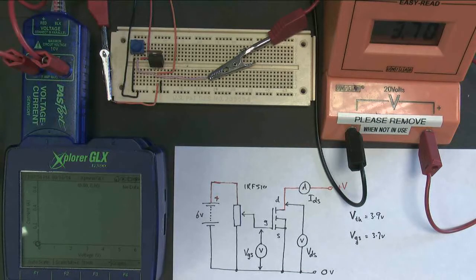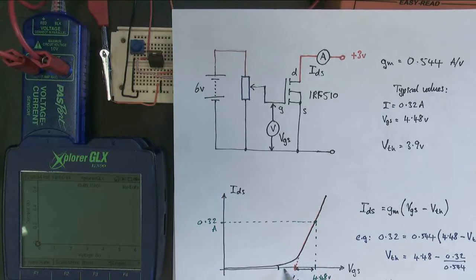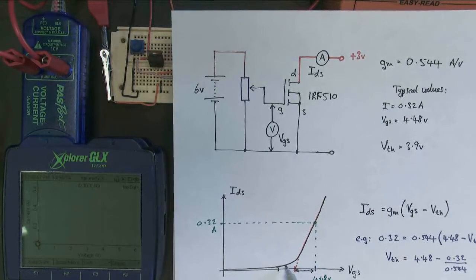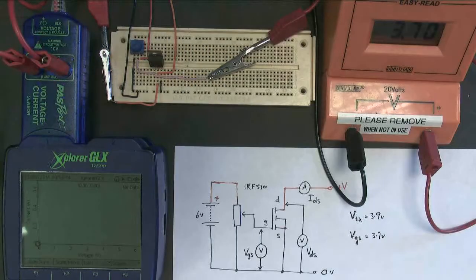Now that's nominally where the MOSFET starts to conduct, but if we remember our results from last time, actually you've got this curve here. So even at 3.7 volts, which is about here, the MOSFET is still going to be conducting a bit. So this is where we're coming from. So let's have a look and see what happens.